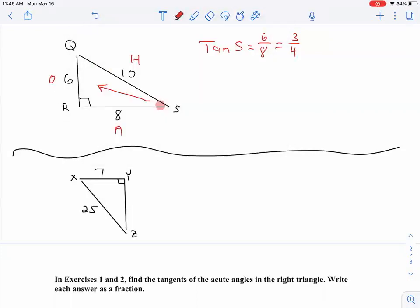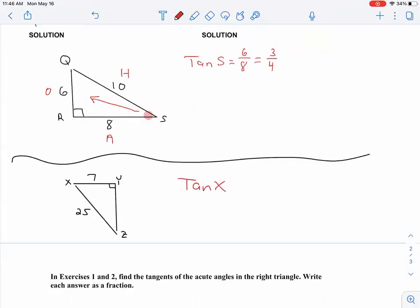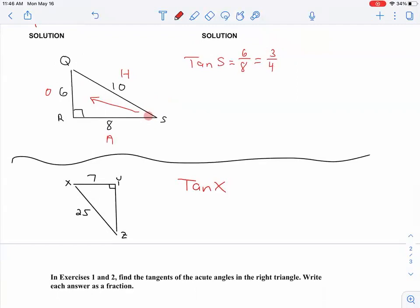And let's say this is 7 and this is 25. And I want to find the tangent of X. So we have this picture, this right triangle here. We have two sides, 7 and 25. We want to find the tangent of X. Why is this problem different than the previous one? Yeah, we're missing a number, right?